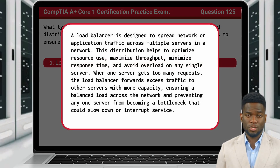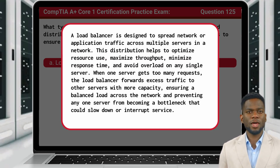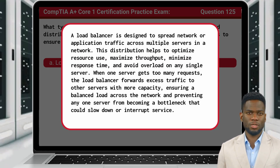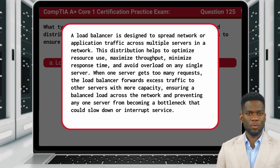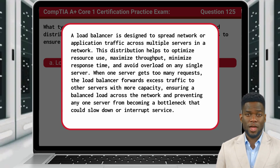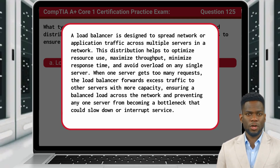A load balancer is designed to spread network or application traffic across multiple servers in a network. This distribution helps to optimize resource use, maximize throughput, minimize response time, and avoid overload on any single server. When one server gets too many requests, the load balancer forwards excess traffic to other servers with more capacity, ensuring a balanced load across the network and preventing any one server from becoming a bottleneck that could slow down or interrupt service.